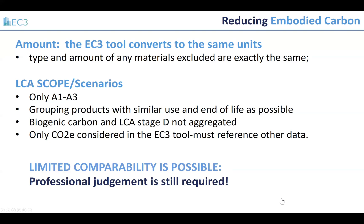We're working to align how biogenic carbon and life cycle stage D are addressed. At this point, the EC3 tool is only considering global warming potential or embodied carbon, and therefore other tools must be referenced for health and other environmental impacts, just like cost or aesthetics — there are multiple criteria that must be assessed.